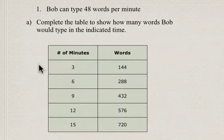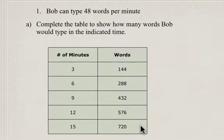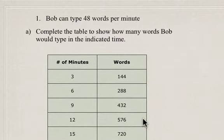And what you should have ended up with is if he types for 3 minutes, he ends up typing 144 words, 6 minutes, 288 words, 9 minutes, 432 words, etc. So these are the values you should have gotten for number of words in your table of values.